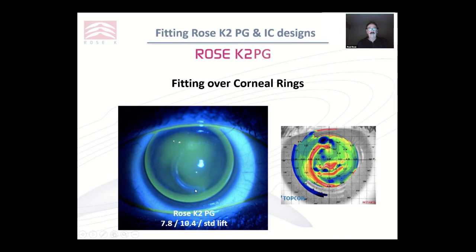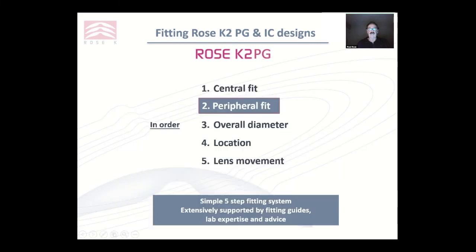Here's a fit over corneal rings — excellent result, lovely edge lift. The main thing with a corneal lens: do not ever leave it flat over the highest part, which is usually where the ring has been inserted. Make sure you clear that area, otherwise you'll get staining over it. Let's move on to the peripheral fit.